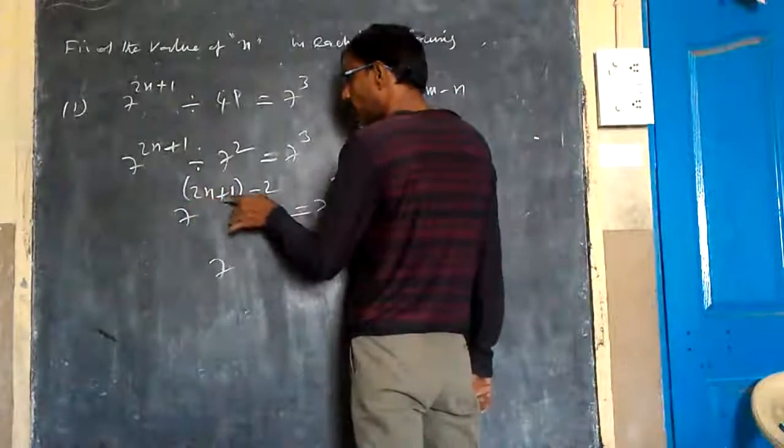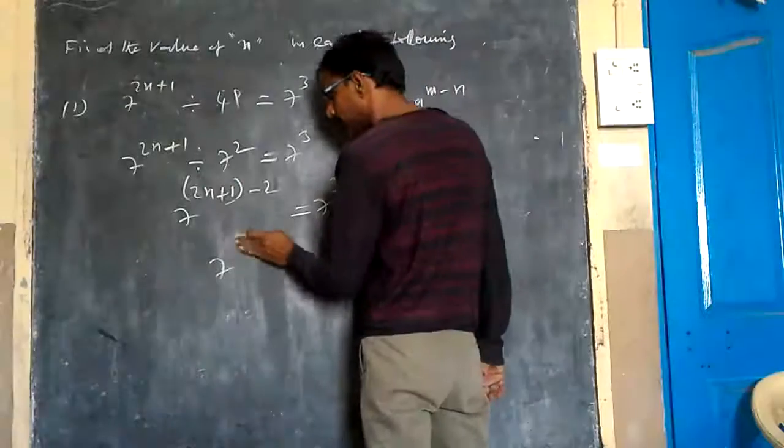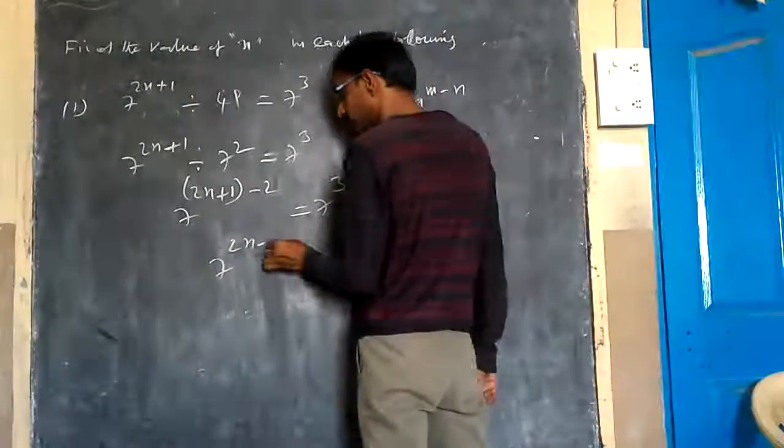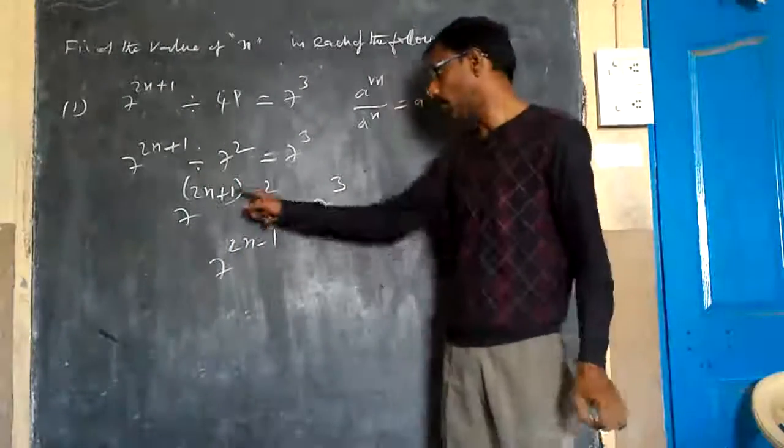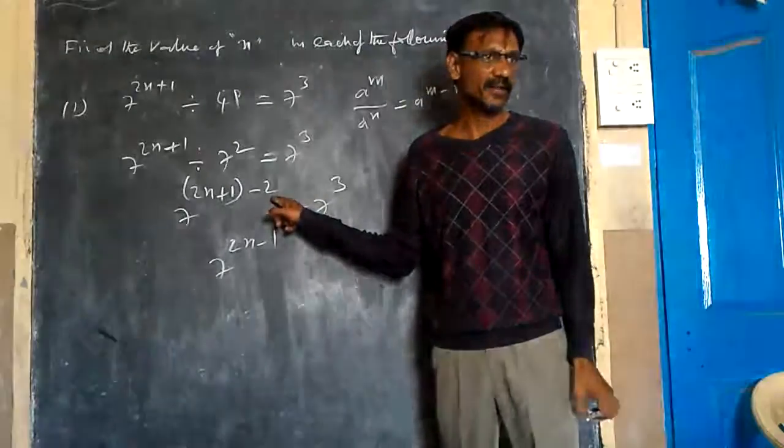7 to the power of 2n plus 1 minus 2. How much is it? 2n minus 1. Why? 1 minus 2 equals minus 1. Is it correct? Yes, sir.